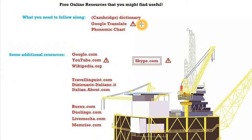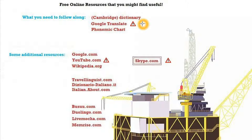Google Translate is going to be your best friend, but be careful because it doesn't translate sentences well — everything you put in as a sentence comes out wrong. Google Translate is very useful when you want to know what a single word means in another language. If you use a couple of words, a bunch of words, or a full sentence, it's going to come out wrong and cause confusion, so only use it for one single word.